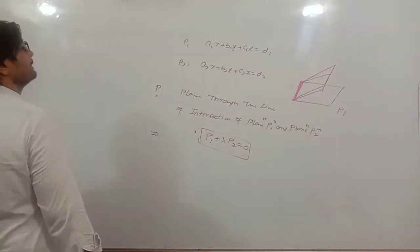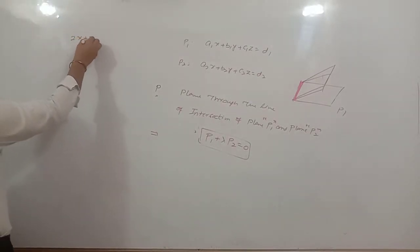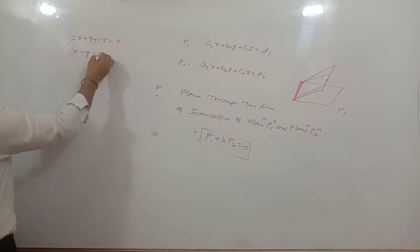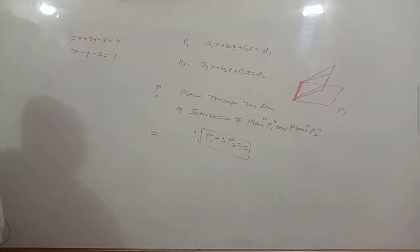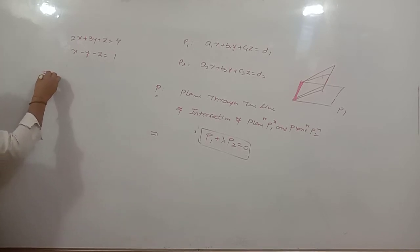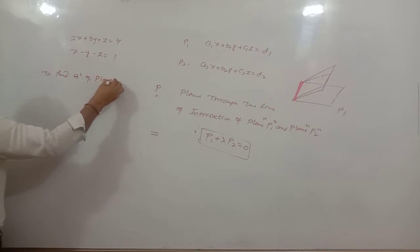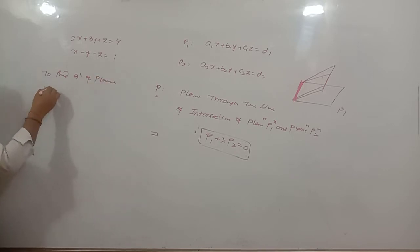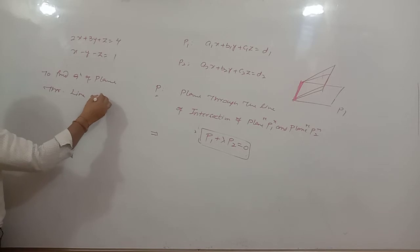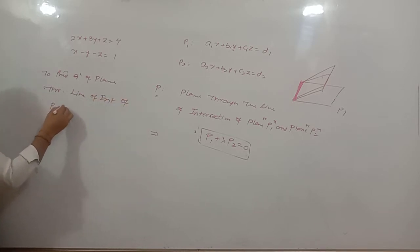Let's see an example. There are two planes: 2x plus 3y plus z is equal to 4, and x minus y minus z is equal to 1. We have to find the equation of the plane through the line of intersection of P1 and P2.